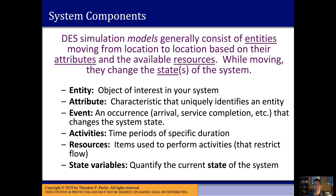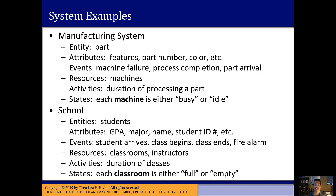For now, I want you to be able to identify entities, attributes, events, activities, resources, and state variables. States are the actual current status of a system, whereas a state variable is like a variable — X or Y — that we use to keep track of the state. Let me give more concrete examples.